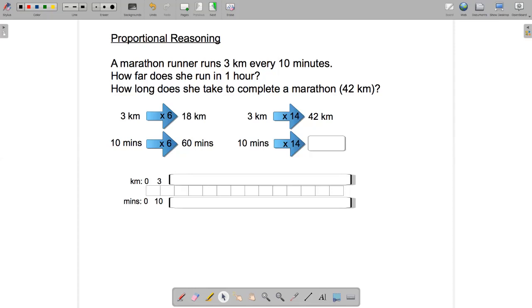The other part of the question was, how long does she take to complete a marathon, approximately 42 kilometers? So let's take a look at that. Again, we've got three kilometers being run in 10 minutes. But this time, we're asked how long does it take the runner to complete 42 kilometers? So if we were to multiply three by 14, we would get 42. Three times 14 is 42. So if we multiply 10 also by 14, that should tell us how long it takes to complete the marathon. And 10 times 14, of course, is 140. So it would take her 140 minutes, or two hours and 20 minutes, which is not too far off a world record.